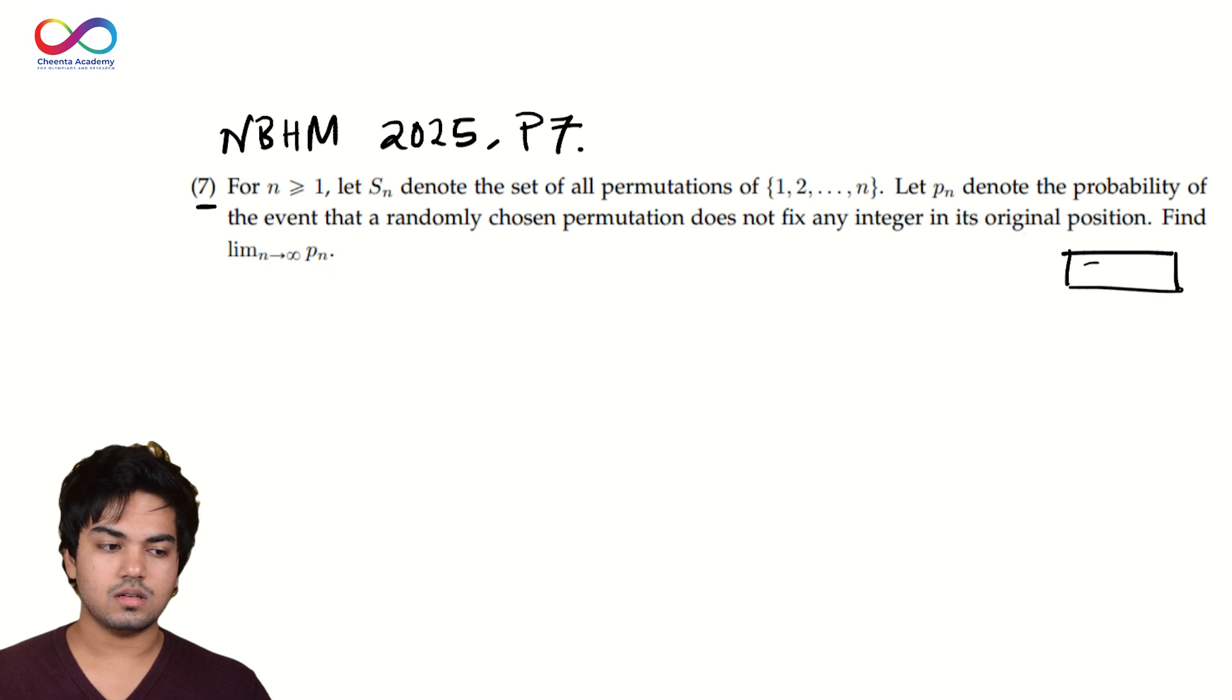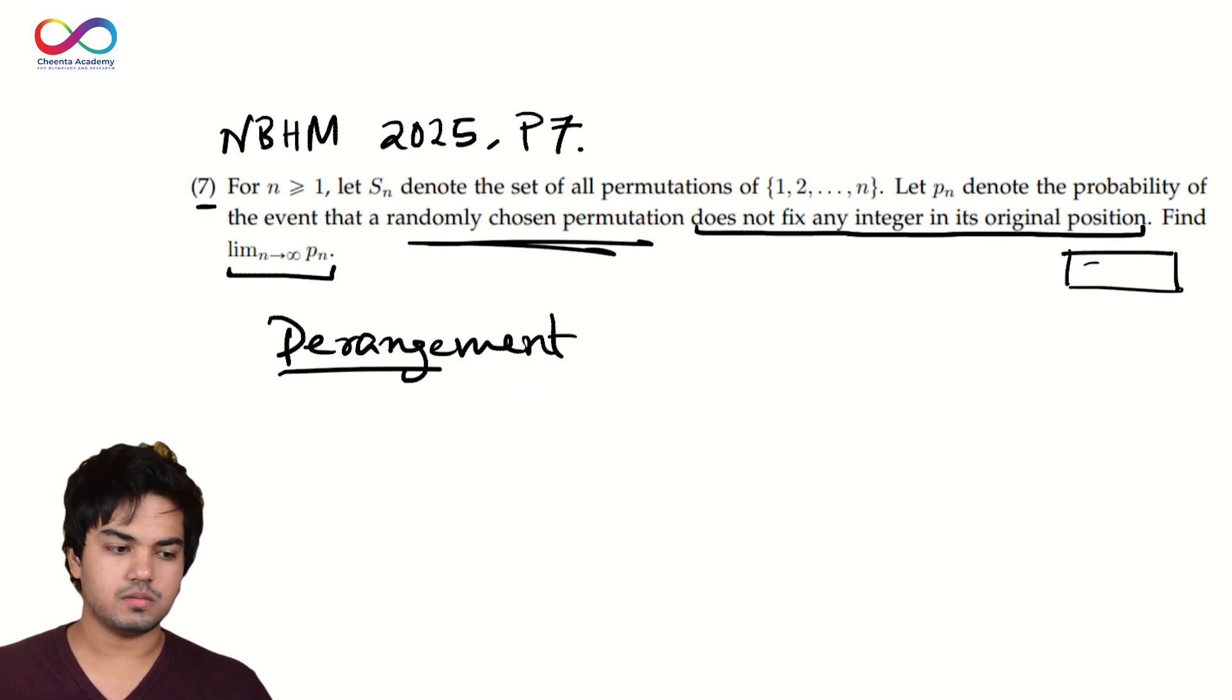For N greater than or equal to 1, let S_N denote the set of all permutations of 1 to N. Let P_N denote the probability of the event that a randomly chosen permutation does not fix any integer in its original position. Find the limit as N tends to infinity of P_N. Okay, so a couple things. Let's clarify. Permutations, I'm sure all of you are aware of. Even if you don't know what probability is, it's just a chance. So if I want to find the probability that a randomly chosen permutation is a derangement, that's what it means. It does not fix any integer in its original position. That's what it means to be a derangement.